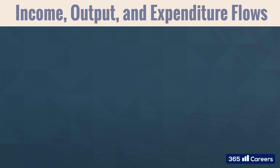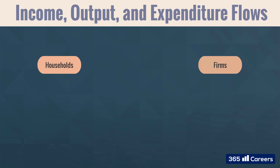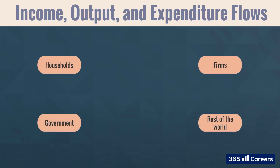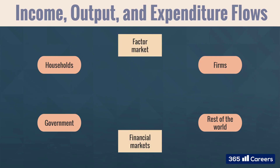In every economy, we have households, firms, the government, and the foreign sector, which we collectively refer to as the rest of the world. The three principal markets where these sectors interact are the financial markets, the market for factors of production, and the goods market.